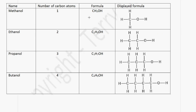Let's look at the homologous series for alcohols. The general formula is CnH2n+1OH. Therefore, the first member of the series is methanol, which has one carbon atom. So it will be CH3OH — using the formula: 2×1+1=3 — and this is the displayed formula for methanol.